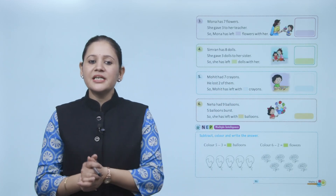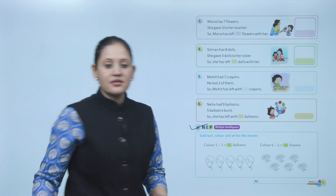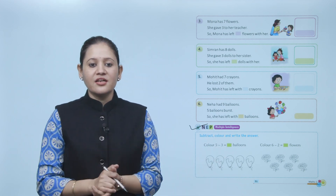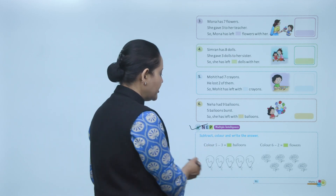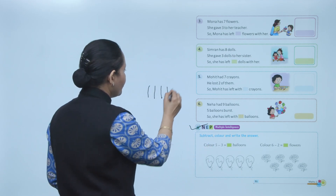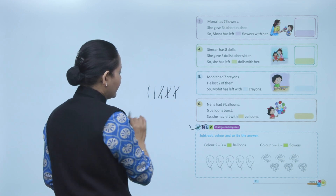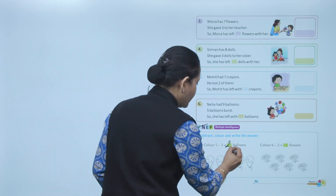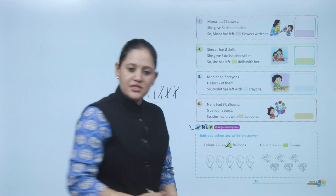Next is multiple intelligence — subtract, color, and write the answer. Color 5 minus 3: 1, 2, 3, 4, 5. 5 minus 3 means 2, so color 2 balloons. You have to color these balloons. Clear.